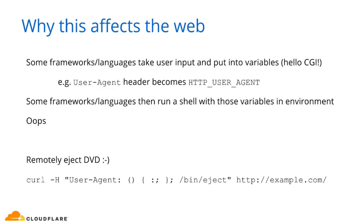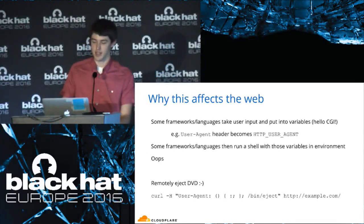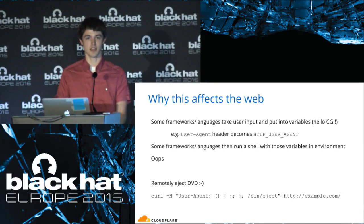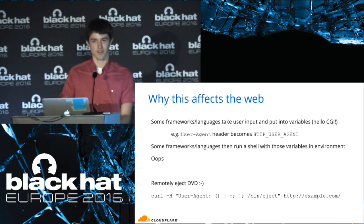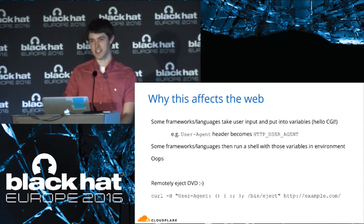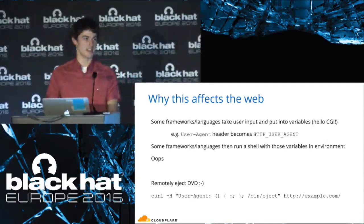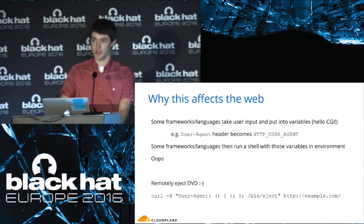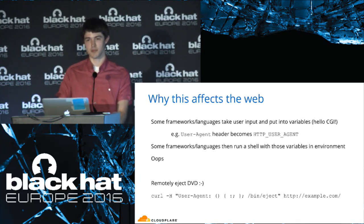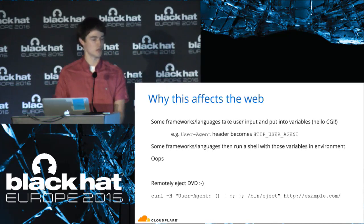Now, how does this affect the web? In the examples before, you already had shell access — you could execute the command yourself if you wanted. But imagine if the environment was passed through a more privileged process, like sudo, or if you got a remote server to execute the function through an environment variable. Unfortunately, this is exactly what the CGI specification does. It passes HTTP request headers as environment variables — things like user agent, referrer, content type. So as soon as you run a shell from a CGI script that inherits the parent environment, you are vulnerable to ShellShock.